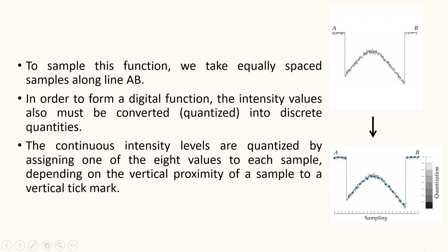The set of dark squares constitutes the sampled function, and in order to form a digital function the intensity values must be converted into discrete quantities. The vertical gray bar depicts the intensity scale divided into 8 discrete intervals ranging from black to white. On the right side you can see this vertical bar which depicts the intensity scale divided into 8 discrete intervals. The vertical tick marks indicate the specific value assigned to each of the 8 intensity levels. The continuous intensity levels are quantized by assigning one of the 8 values to each sample depending on the vertical proximity of a sample to the vertical tick mark.